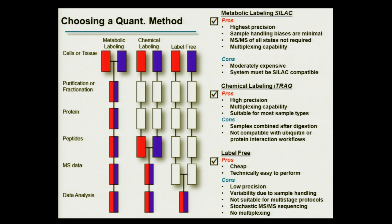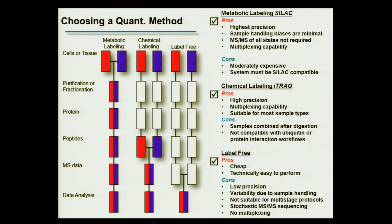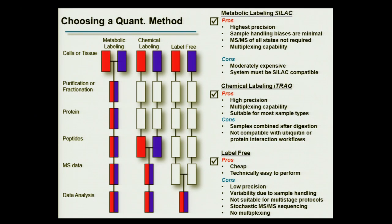When embarking on a quantitative proteomics experiment, the first step is to choose a quantitation method — something we spend a lot of time thinking about with our collaborators. The decision is based on what type of sample you have and what the goals of your experiment are. The workflow diagrams here show the different steps in the proteomic workflow and at what points samples are either combined or left separately. The three main approaches are metabolic labeling (SILAC), chemical labeling (iTRAQ or TMT), and label-free.